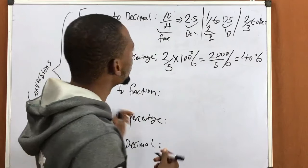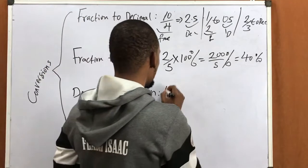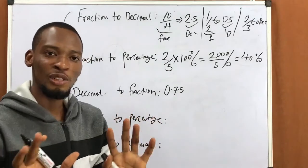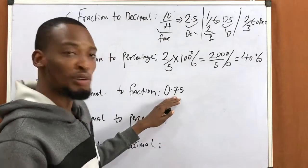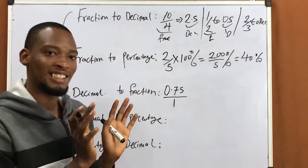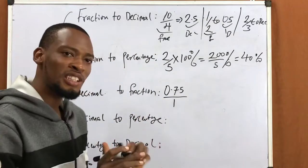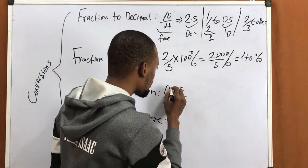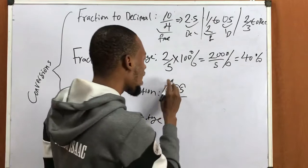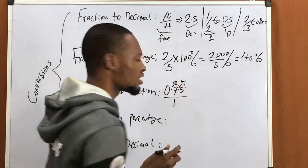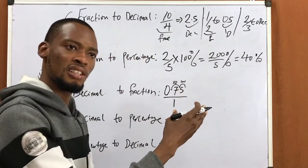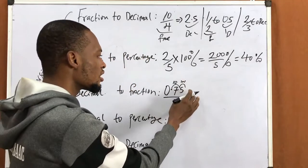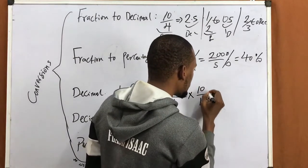Now, converting from decimal to fraction. Let's say you are given 0.75 and asked to convert to fraction. Here is the easy trick: take the number and divide by 1. Then come to the decimal point and count the digits after it — 1, 2. So 1 is 10, 2 is 100. If there were a third digit it would be 1000. We have two digits after the decimal point, so multiply the top and bottom by 100.